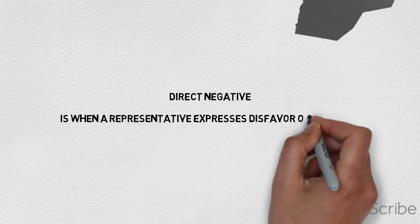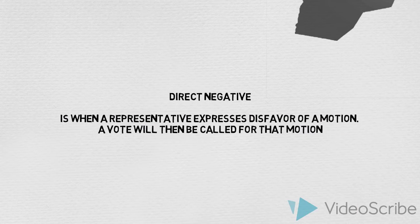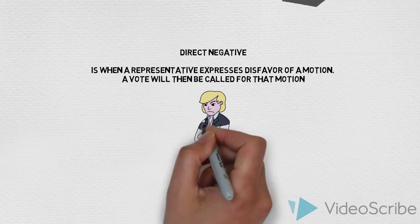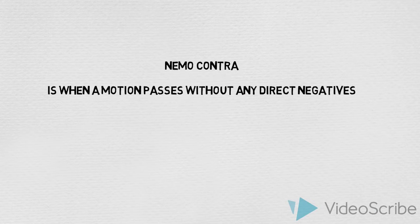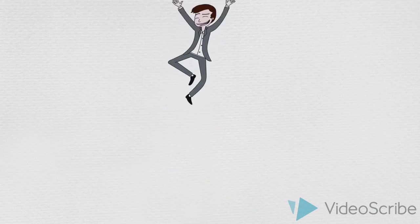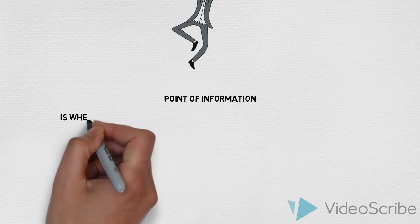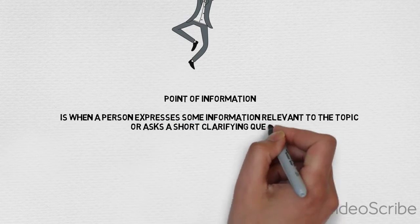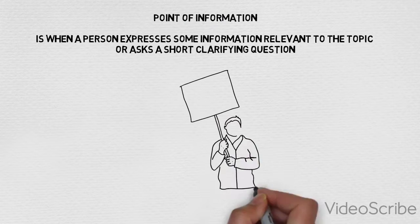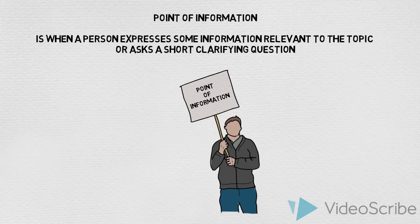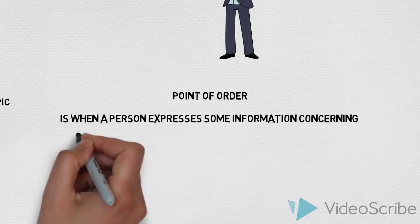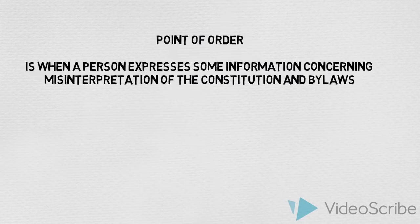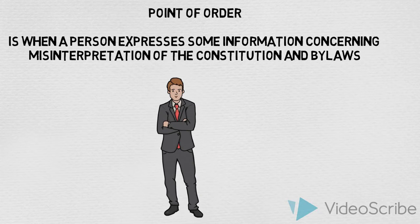A direct negative is when a representative expresses disfavor of a motion; a vote will then be called for that motion. Nemo contra is when a motion passes without any direct negatives. A point of information is when a person expresses some information relevant to the topic or asks a short clarifying question. A point of order is when a person expresses some information concerning misinterpretation of the constitution and bylaws.